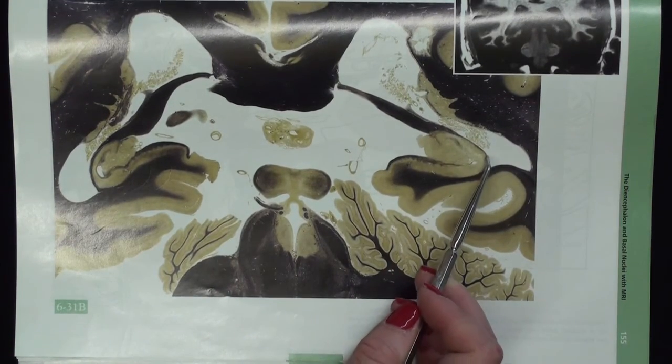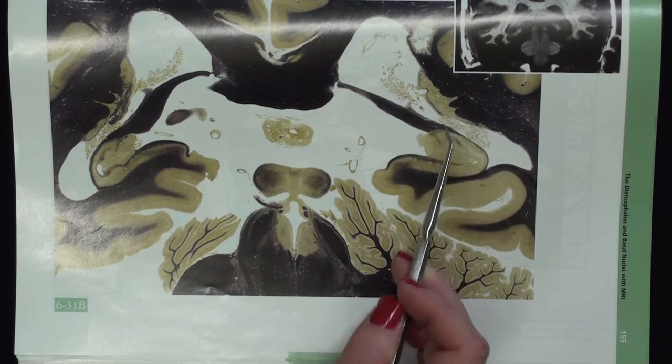Hippocampal formation on this side, alveus right on the surface, fimbria the little finger-like projections.